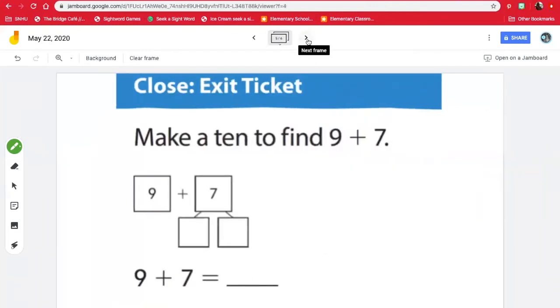Here's our last problem for today. We need to make a 10 in order to find 9 plus 7. So the first thing I want to do is draw our circle around where our 10 is going to be made. How can we make a 10 using the number 9? How many more do we need to make 10? 10, 9, 10. I need one more. So we have 10 plus 1 plus what equals 7? Well, what's one less than 7? Seven, six. So that means 6 plus 1 equals 7, and we need to add 6.